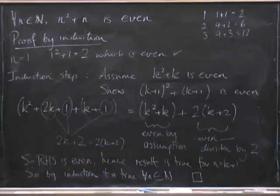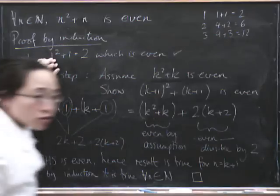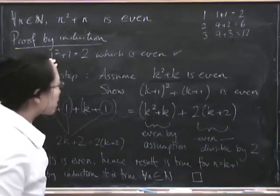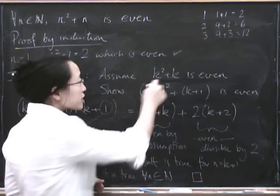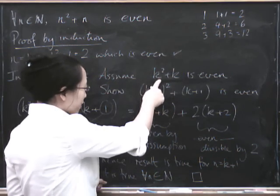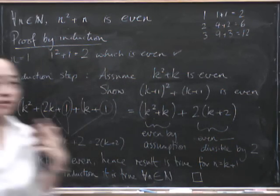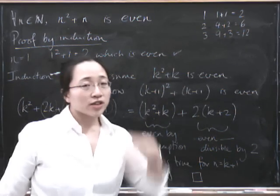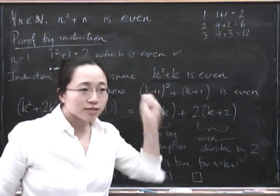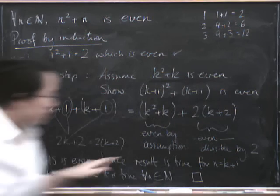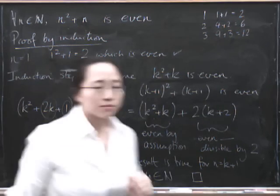So let's just recap what we did. First, we checked it was true for n equals 1. Then we said, suppose it's true for n equals k. Then it's definitely true for n equals k plus 1. So we've done the starting case and the step. So we've done it for all n in the natural numbers.